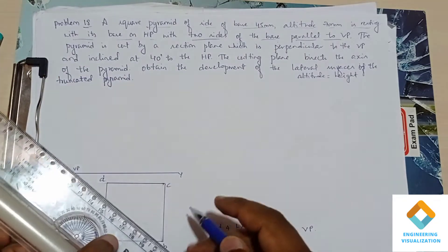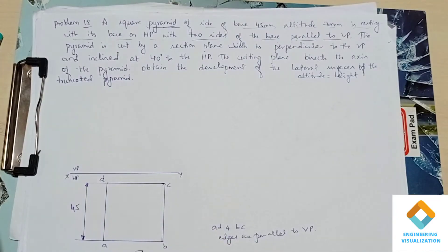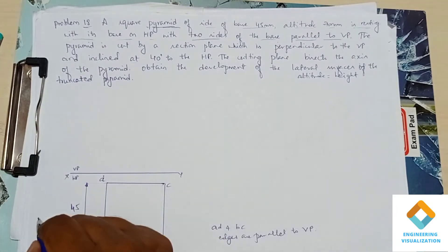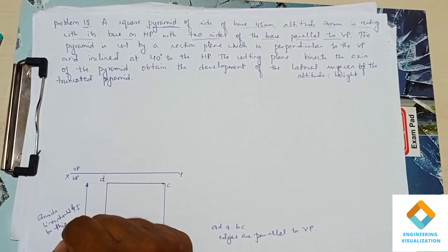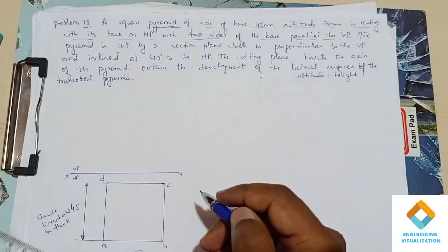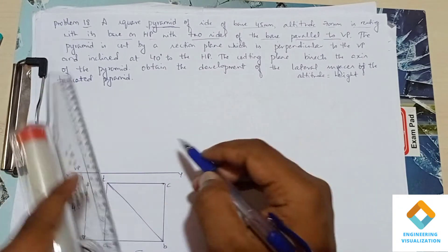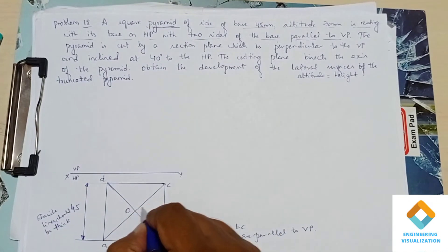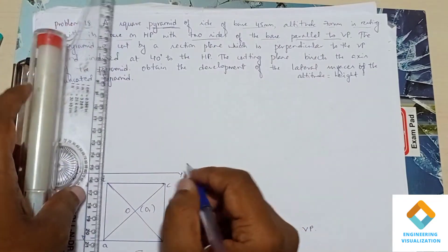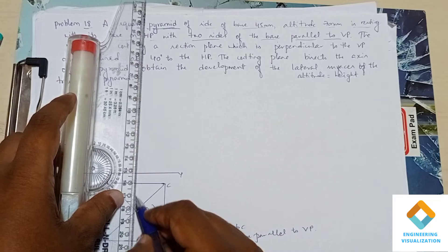Since it is a pyramid, we should draw the slant edges as thick dark lines. Inside lines should also be drawn as darker lines. Connect from B to D and A to C, and mark the center point as O1.